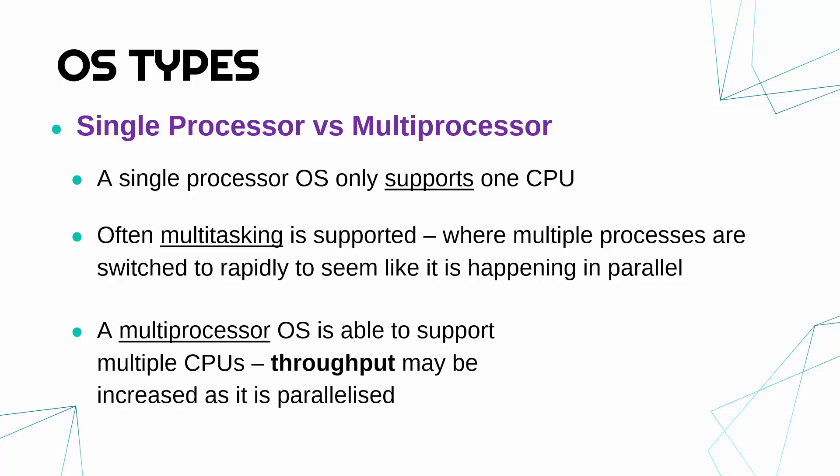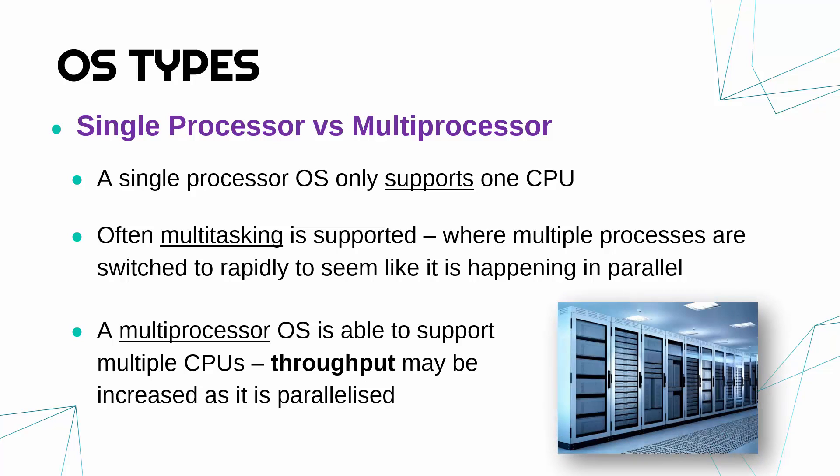In more powerful computers you can have multi-processor OSs which support multiple CPUs. You only really find these in the most powerful servers and mainframe computers which might have loads of CPUs in one system. The benefit of a multi-processor OS is that you can do things definitively in parallel — with a single CPU you can't do things exactly in parallel, it only seems like you can. With multiple CPUs you can truly do more than one thing at once, which increases throughput — how much you're doing at any given moment. Most computers are single-user, single-processor, but more powerful ones can be multi-user and/or multi-processor.